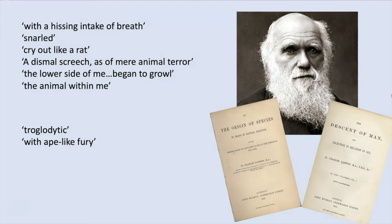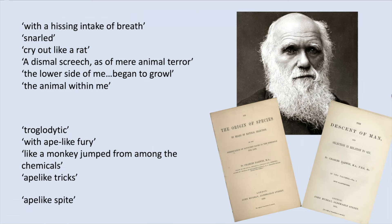The murder of Danvers Carew is committed with ape-like fury. In Chapter 8, Paul describes how Hyde, like a monkey, jumped from among the chemicals. Finally, at the very end of the novella, Stevenson uses two instances of ape references when Jekyll describes both his ape-like tricks and ape-like spite. This double usage in such a short space leaves us in no doubt that Stevenson is tapping into contemporary concerns related to evolution in order to create fear in his readers, suggesting not only that there is a primitive, animalistic side to all humans, but that it is possible to devolve into this dangerous state.